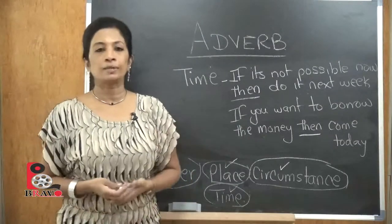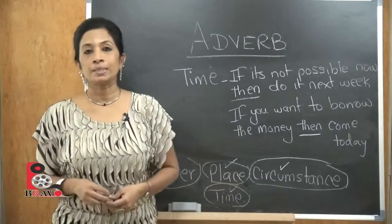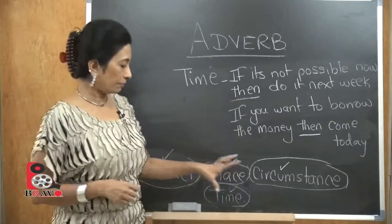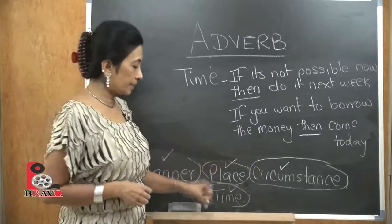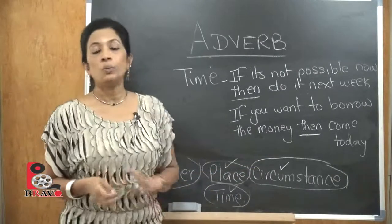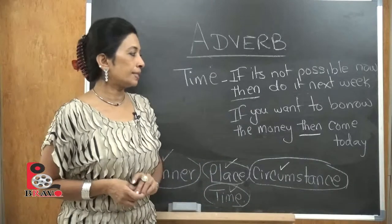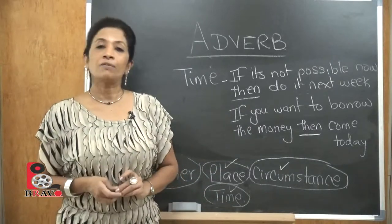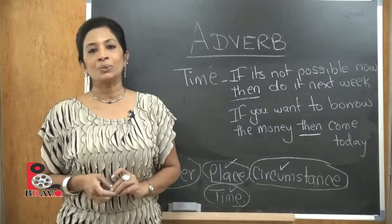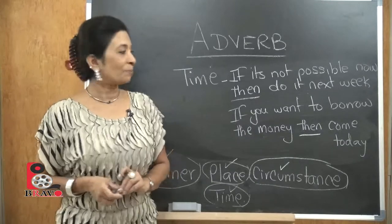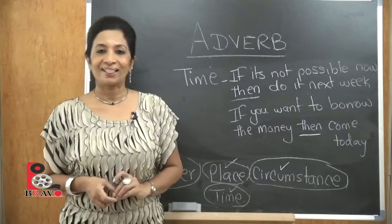These are some of the examples of adverbs we have seen today. I hope this exercise on adverbs has been useful. We've seen four examples — manner, place, circumstances, and time — with sentences showing how to use them. Thank you very much for watching Bravo Easy to Learn English School, and I hope you've enjoyed learning today.